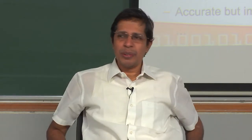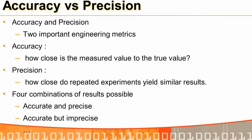Let us start with what we mean by accuracy and precision — two very important engineering metrics. Accuracy is how close the measured value is to the true value. Precision means: if we keep doing an experiment repeatedly, how close are the results to each other? If we repeat the experiments and get almost the same result, then the arithmetic is precise.